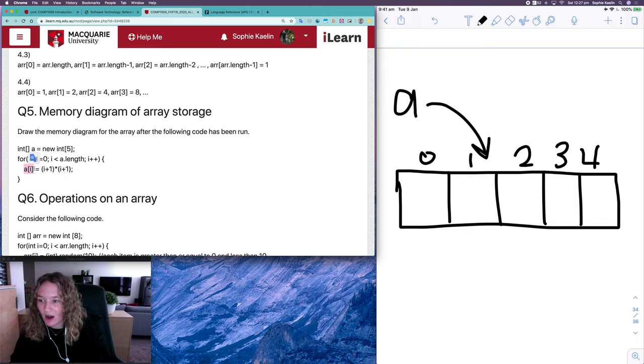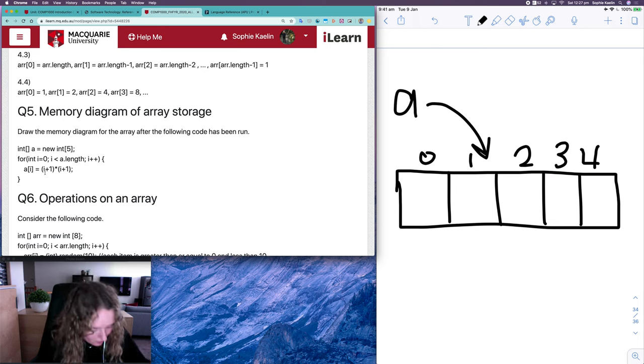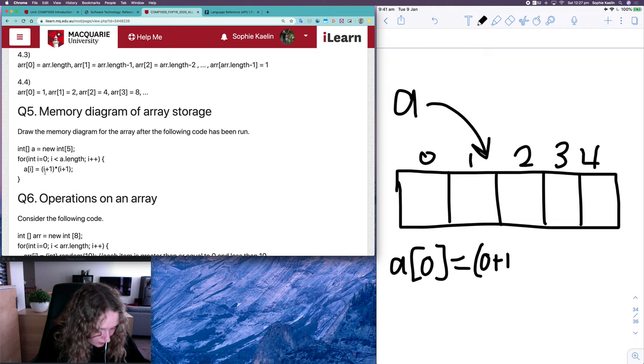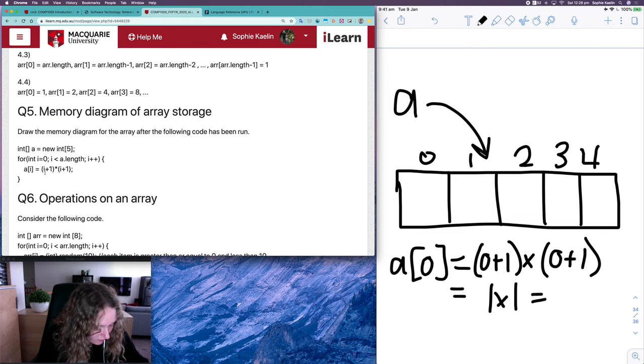So a[i] is equal to (i plus one) times (i plus one). So for when i is zero, that is equal to zero plus one times zero plus one, which is just one times one, which is one. And that's our first one.